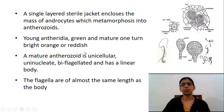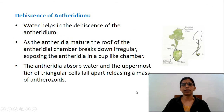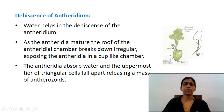A mature antherozoid is unicellular, uninucleate, biflagellated, and has a linear body. The flagella are of almost the same length as the body. Water helps in the dehiscence of the antheridium. As the antheridia mature, the roof of the antheridial chamber breaks down irregularly, exposing the antheridia in a cup-like chamber. The antheridia absorb water and the uppermost tier of triangular cells fall apart, releasing a mass of antherozoids. After dehiscence, the antheridium loses turgor and collapses.